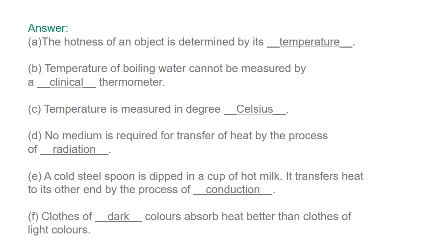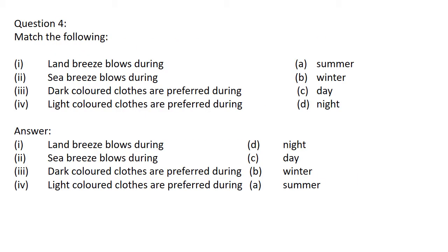The answers: the hotness of an object is determined by its temperature. Temperature of boiling water cannot be measured by a clinical thermometer. Temperature is measured in degree Celsius. No medium is required for transfer of heat by the process of radiation. A cold steel spoon dipped in a cup of hot milk transfers heat by the process of conduction. Clothes of dark colors absorb heat better than clothes of light colors.